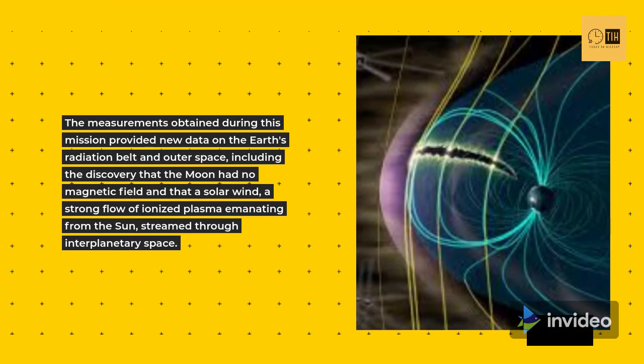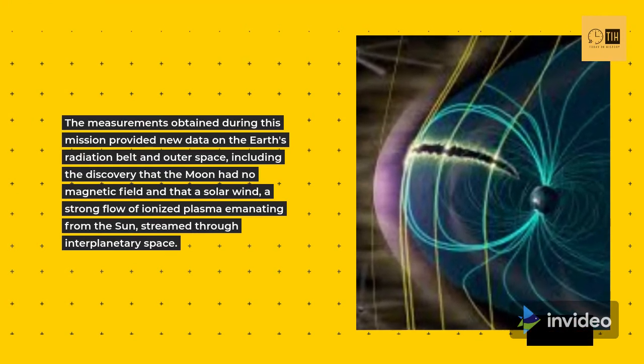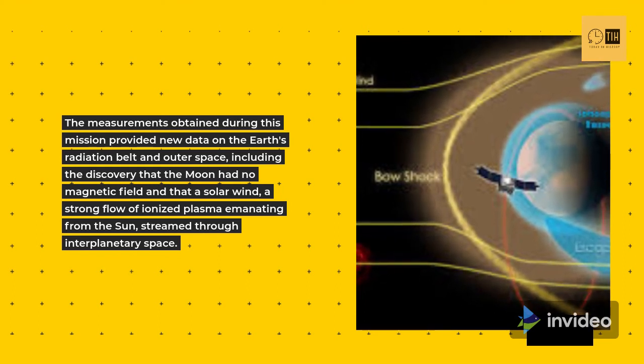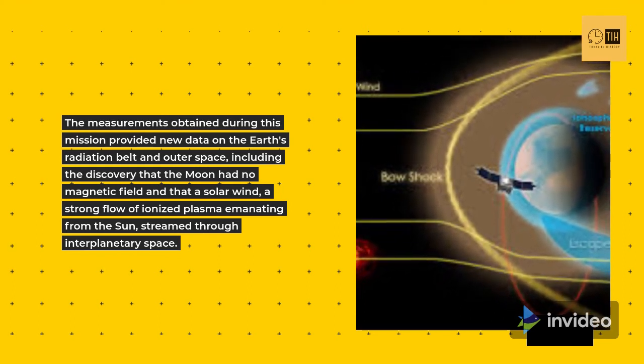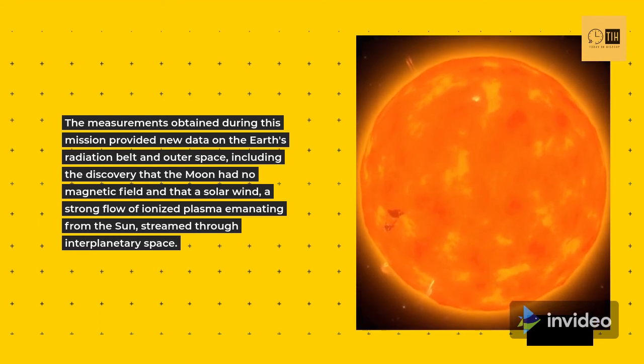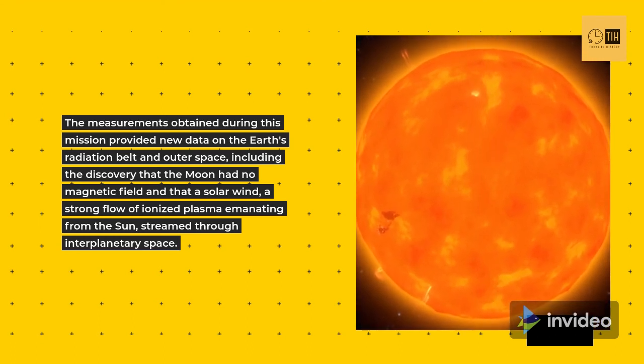The measurements obtained during this mission provided new data on the Earth's radiation belt and outer space, including the discovery that the Moon had no magnetic field and that a solar wind, a strong flow of ionized plasma emanating from the Sun, streamed through interplanetary space.